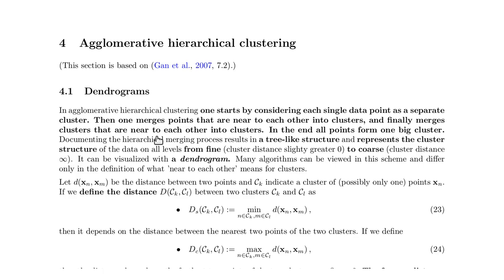Here we look at agglomerative hierarchical clustering, which means we start by considering every data point as a separate cluster and then we merge the points. We merge the points that are closest, so we look for the two nearest points and define them as one cluster. As long as we just merge single points, it's quite obvious what the distance would be — in Euclidean space it would be the Euclidean distance. But if the points have already grouped into small clusters, one needs to define what distance actually means.